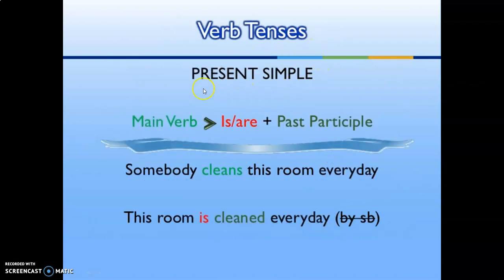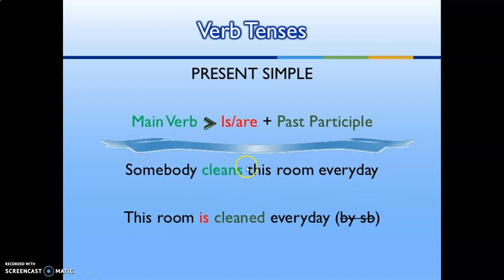For simple present tense, the main verb form is 'is' or 'are' plus past participle. Example: 'Somebody cleans this room every day.' In passive voice: 'This room is cleaned every day.' We use 'is' here with the main verb plus past participle.